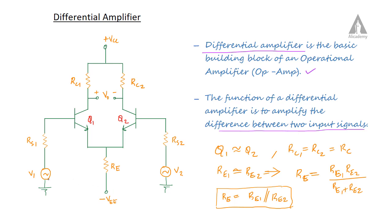We have two input sources V1 and V2, with source resistors RS1 and RS2 respectively.